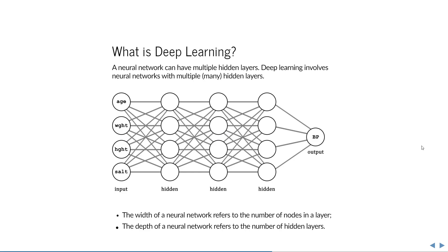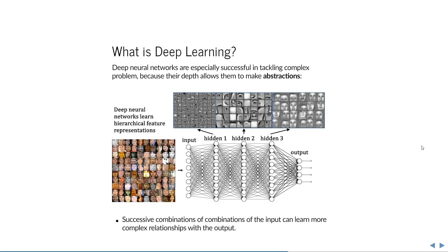Why are deep neural networks so popular? They're able to make abstractions. For example, with a large database of images of people's faces: if we just take combinations of the input pixel intensities, we can only learn rudimentary shapes like edges, corners, and contrast differences. But combining these shapes into another hidden layer gives us actual shapes relevant to the image — like a nose, an eye, or a mouth. Combining those learned features gives us entire faces. This is called hierarchical feature representation — successive combinations of combinations of the input can learn more complex relationships with the output.